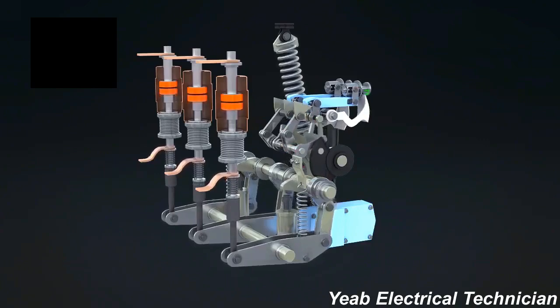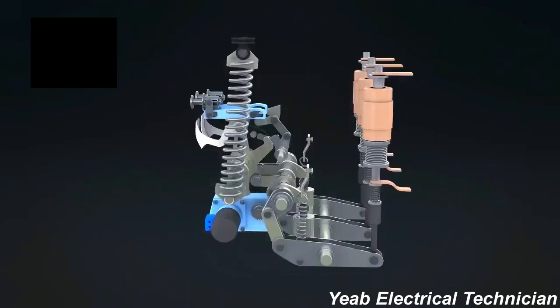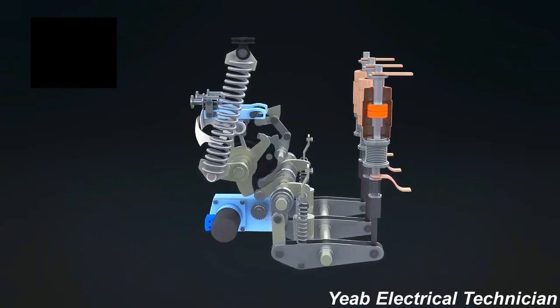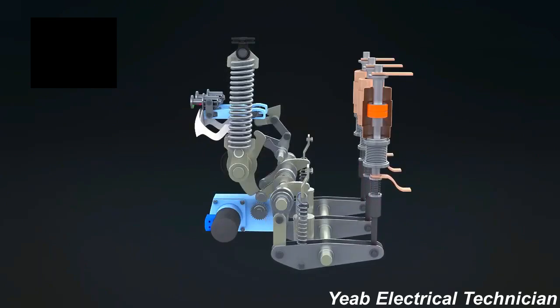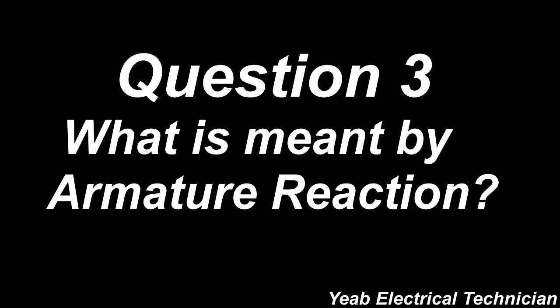Various mediums are used to quench this arc in respective circuit breakers, but in the vacuum circuit breaker, the medium is vacuum. Since the vacuum circuit breaker has vacuum pressure, the arc formation is interrupted. Vacuum circuit breaker can be used up to 11 kV.